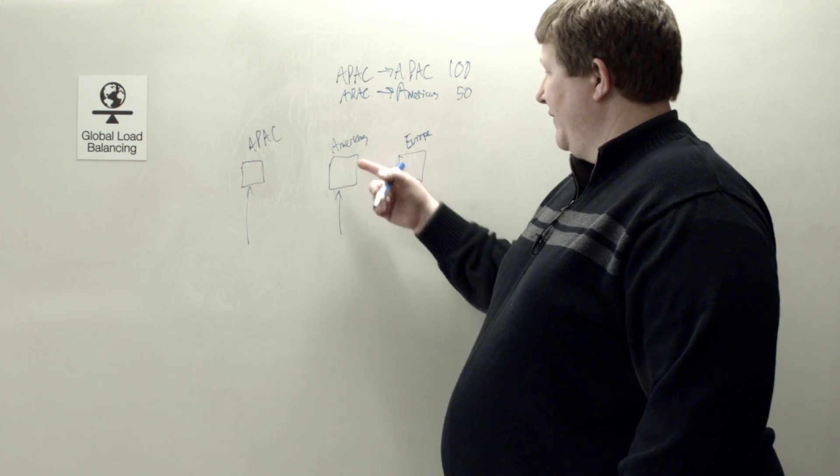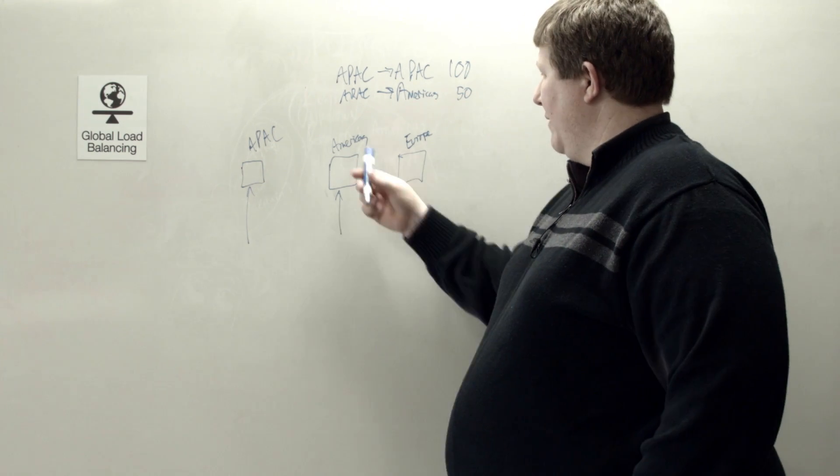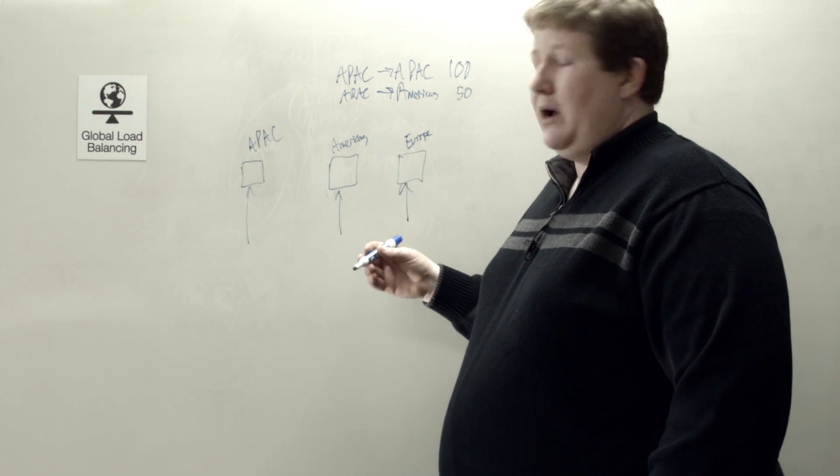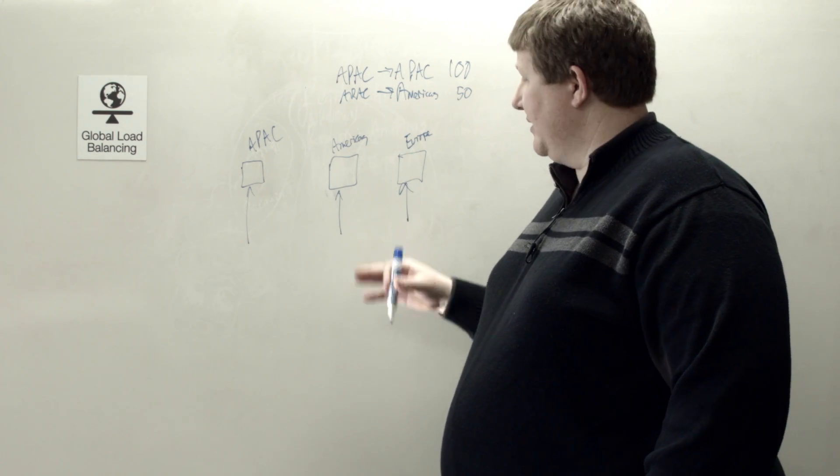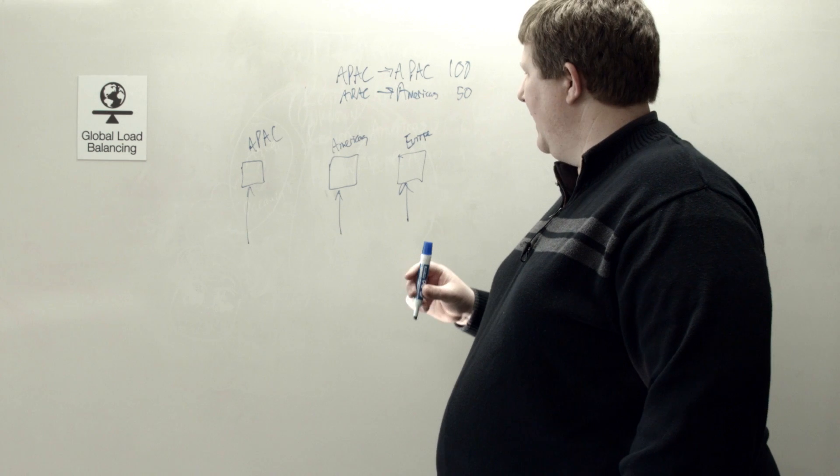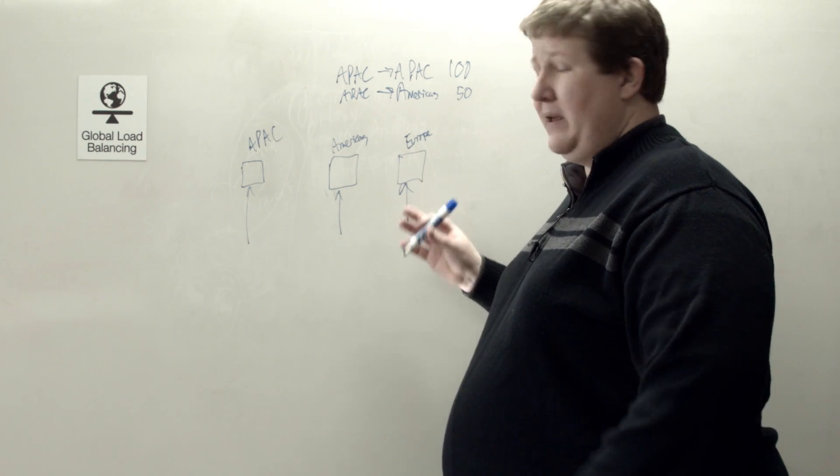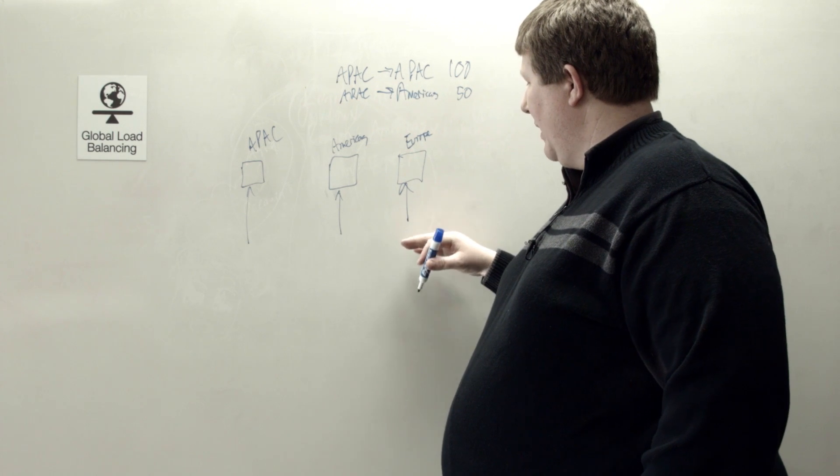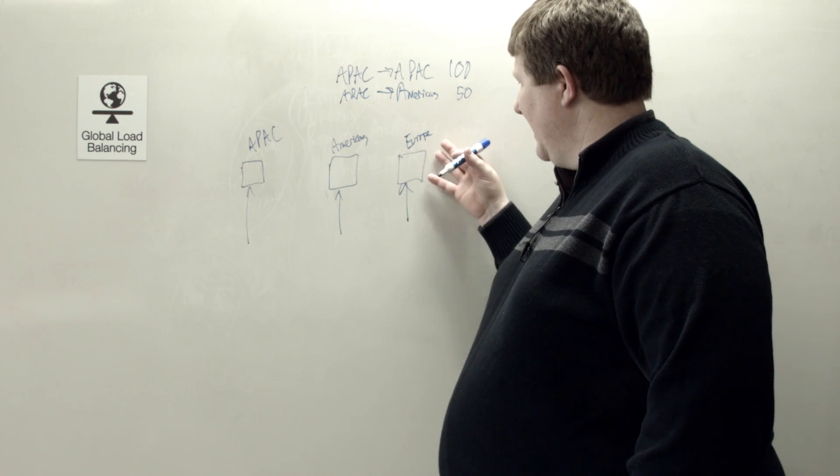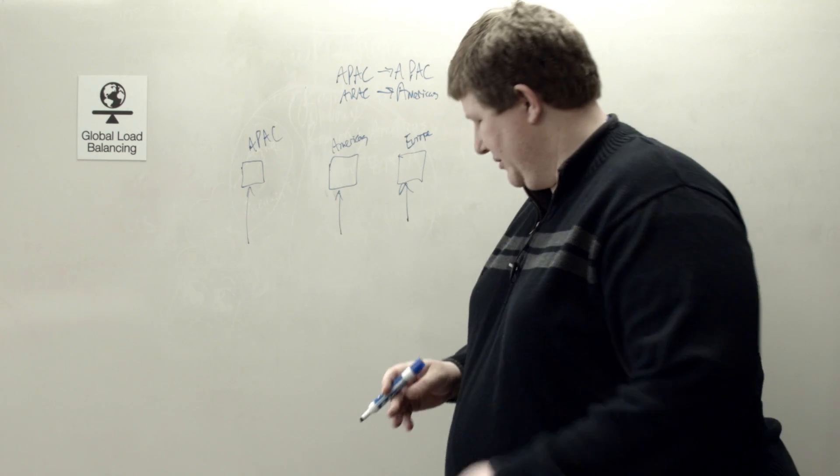And then of course, for the Americas, you can do something similar. Say for Americas, I want primarily I want all the traffic from the Americas to come to the Americas region. And then if it's not available, I want to send that to Europe. And then vice versa. For Europe, I want it to go to the Europe region. But if it's coming from Europe and that's not available, I want it to come to the Americas region.